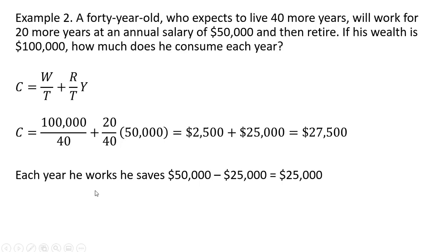Each year this person works, he saves $25,000. Out of this $50,000 income, the MPC is one-half, so the person will only spend $25,000 of their income each year. The remaining expenditures are coming from wealth, which is being eaten down by $2,500 a year.